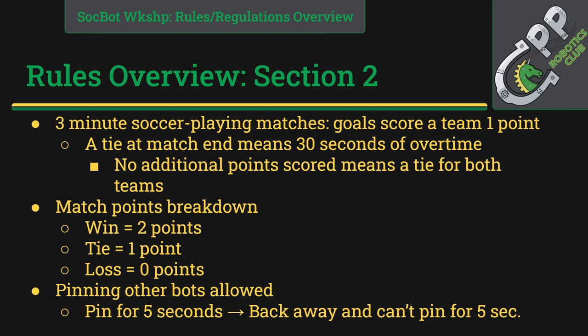Section 2 covers gameplay. Games are three minutes of robot soccer where goals score your team one point. If there is a tie at the end, we go into a maximum of 30 seconds of overtime. If the tie can't be settled, we assign a tie. A win gains your team two points, a tie gains one point, and a loss gains no points.